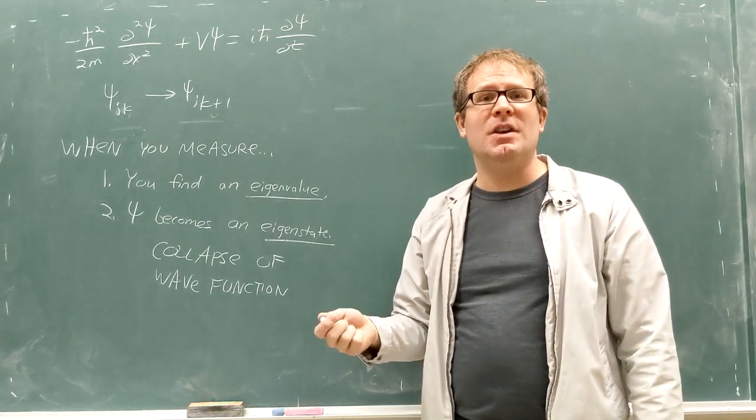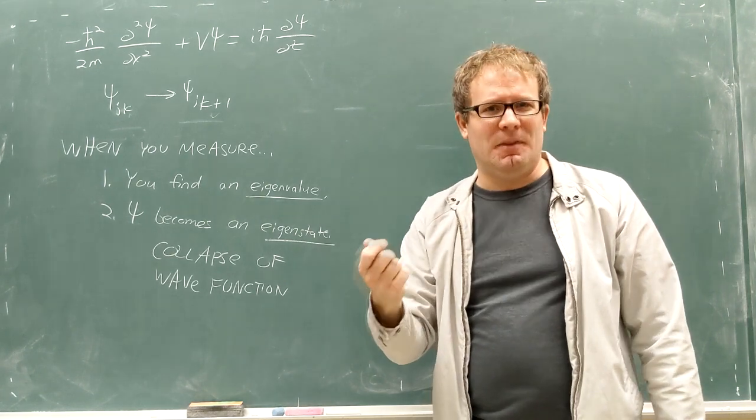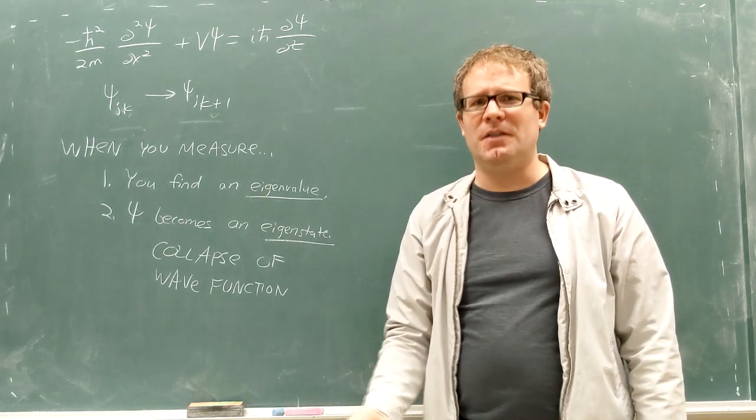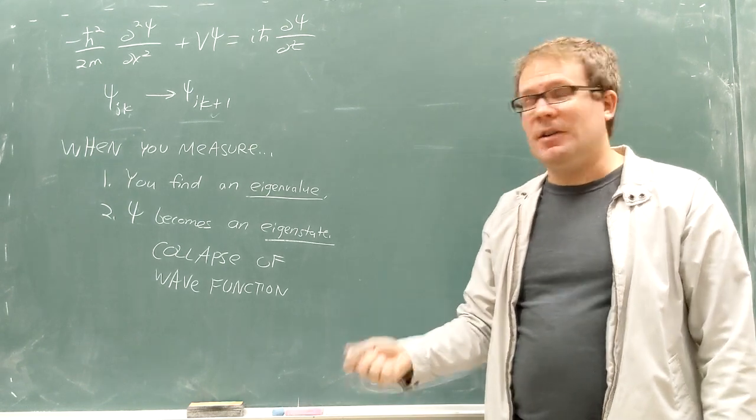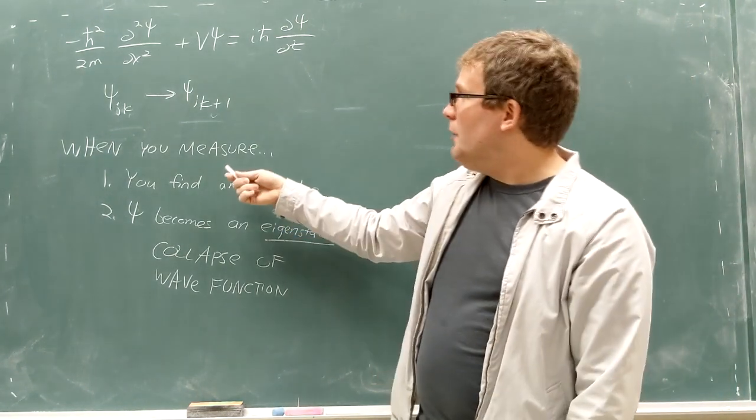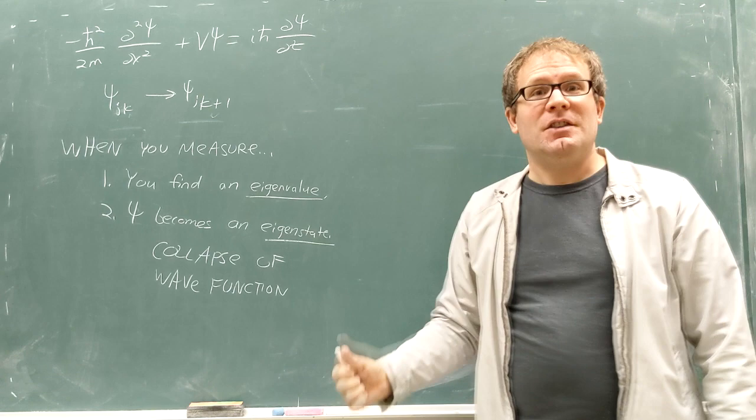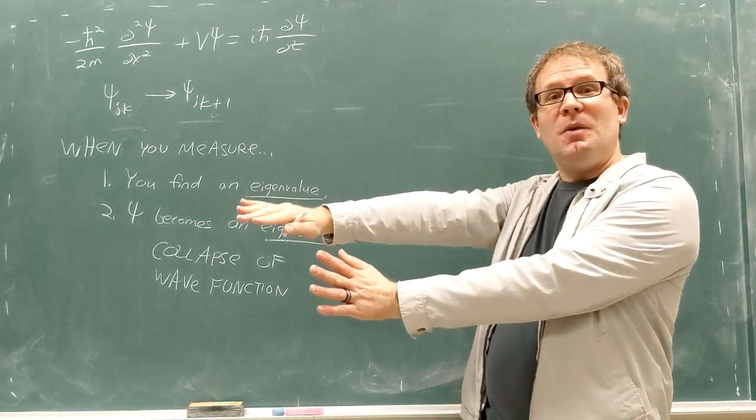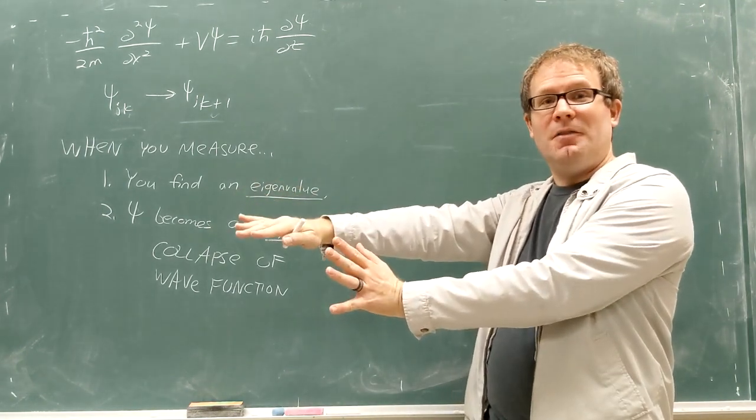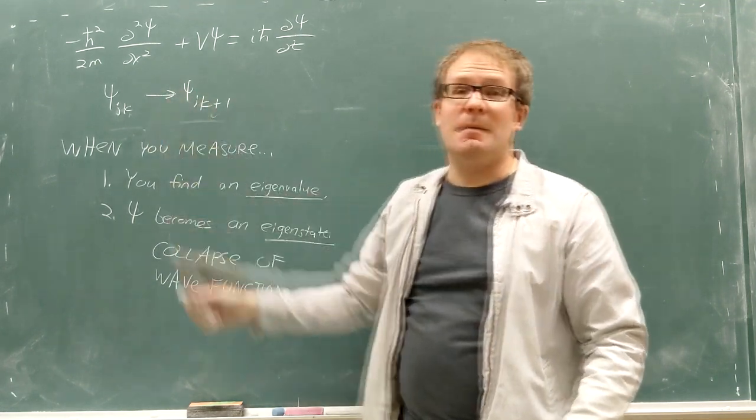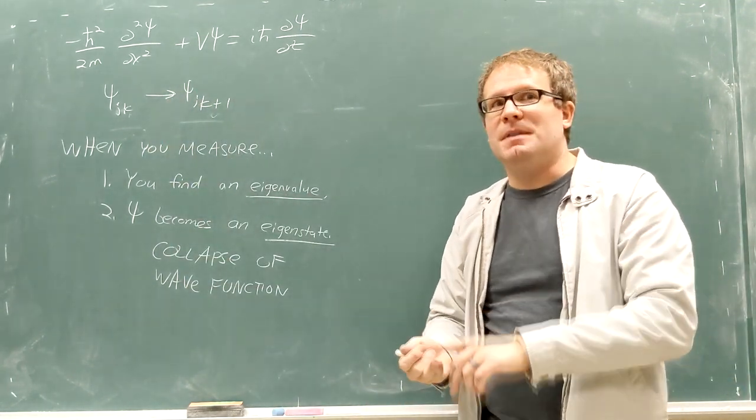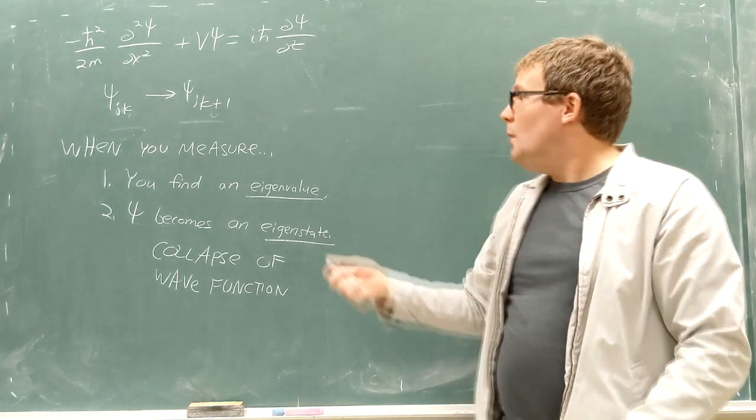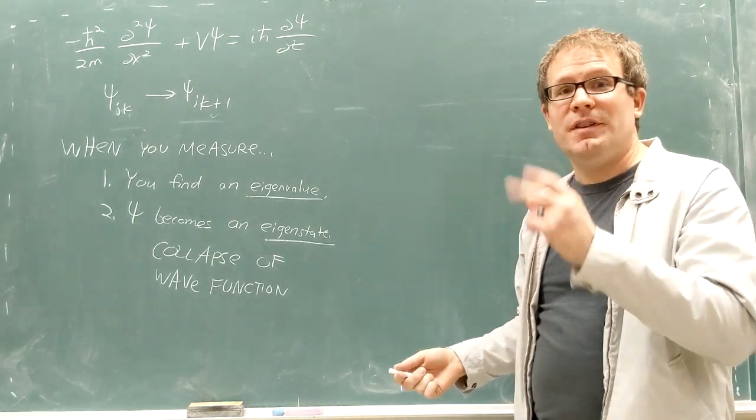This time evolution happens when you're not looking at the particle, which sounds like a weird thing, and trust me it is a weird thing. But what we mean when we say it evolves while you're not looking, it means it evolves when you're not taking any kind of measurement. When you are not looking at the particle, when you are simply letting it do its quantum mechanical thing, it undergoes this time evolution. But when you take a measurement, whether it's the energy, the position, the momentum, when you take a measurement on the particle, two things happen.